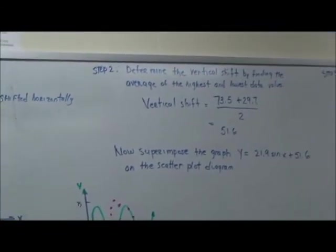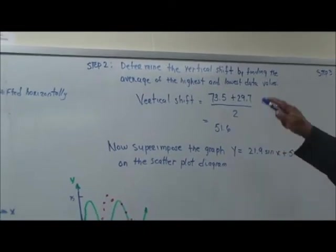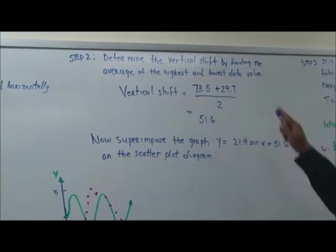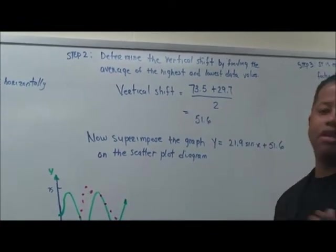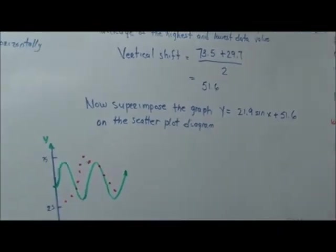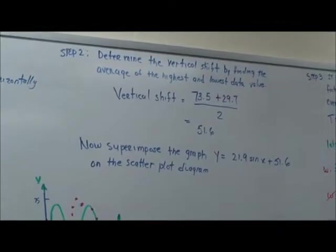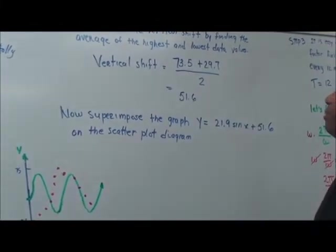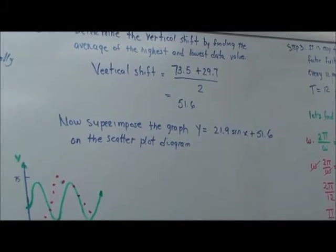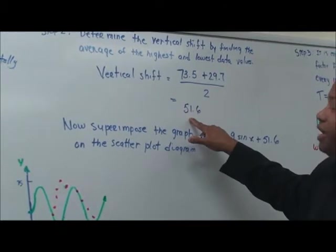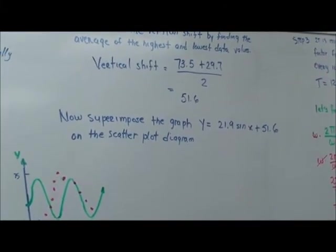we want to determine the vertical shift by finding the average range, or the average of the height, excuse me, the average of the highest and the lowest data value. So, we want to find the average of that. So, it's like you're checking the mean on both of these things. And the vertical shift is going to equal to 73.5 plus 29.7 degrees. Divide it by two, and we come up with the mean, or an average, the average temperature in this particular group between these two pieces of information, 51.6.